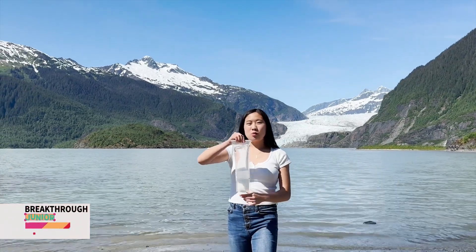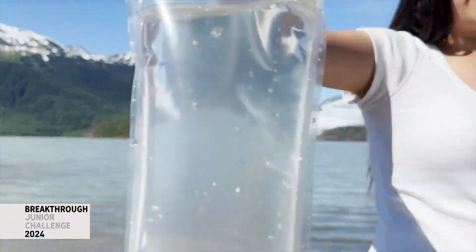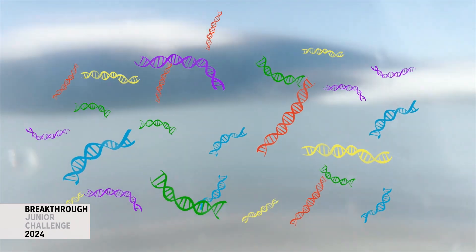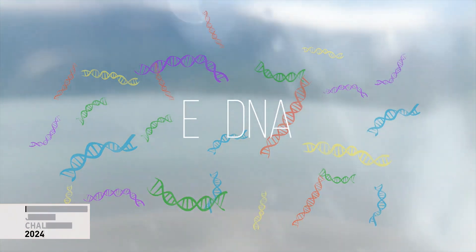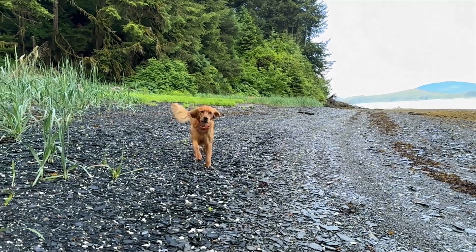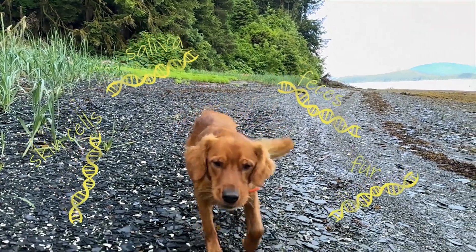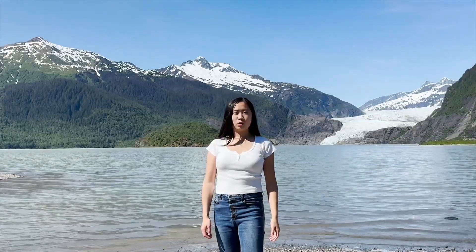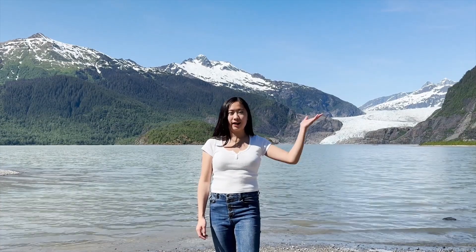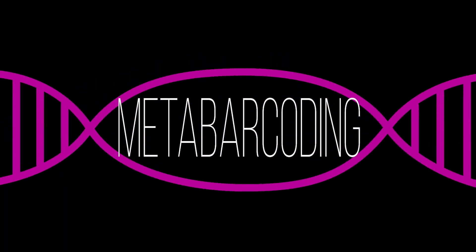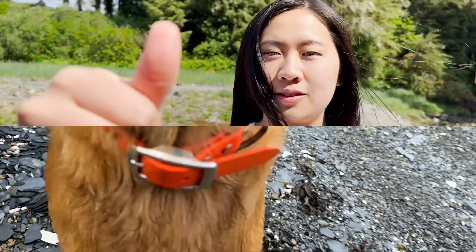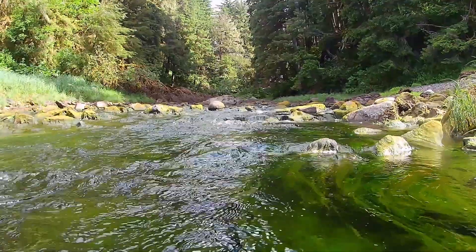How many species are in this bag? Well, it might look like nothing at first, but this one liter of water contains DNA from tens or hundreds of species. This is environmental DNA, aka eDNA. eDNA is any source of DNA an organism sheds in its environment. We can collect eDNA from water, land, or air to figure out what species are in an area without ever seeing them. We do this through a process called metabarcoding. Just like every person has a unique fingerprint, every species has its own eDNA barcode.